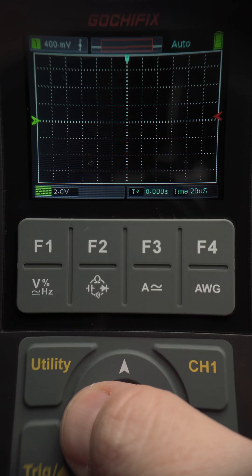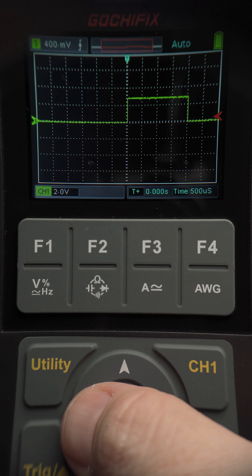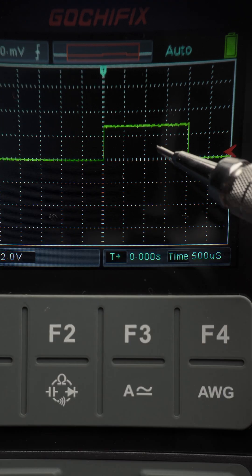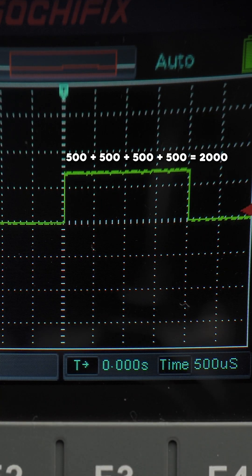Next, we'll zoom in on the time axis to measure the pulse width. If the horizontal grid is set to 500 microseconds per square, a pulse stretching over 4 squares shows a 2,000 microsecond pulse width.